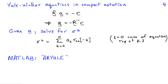There is a MATLAB command that does all of this called arYule. It takes the data, estimates the correlation coefficients or the covariance function (assuming zero mean, so those are equivalent), and outputs the autoregressive model parameters — the a's — as well as sigma squared.